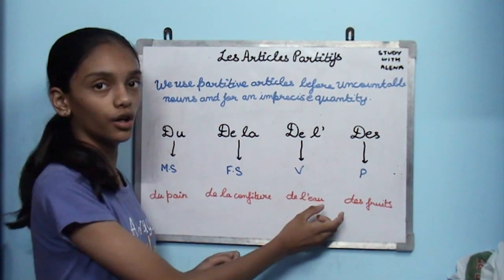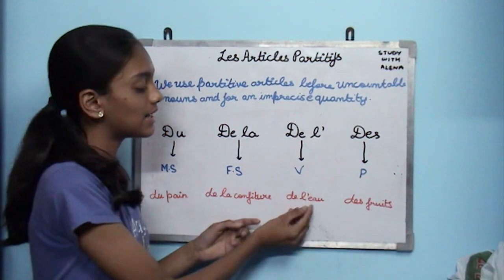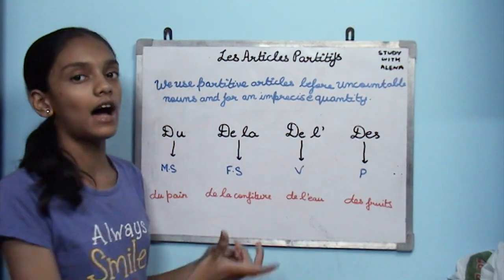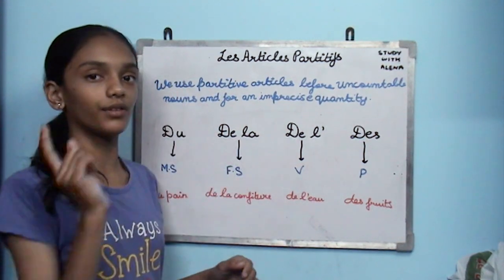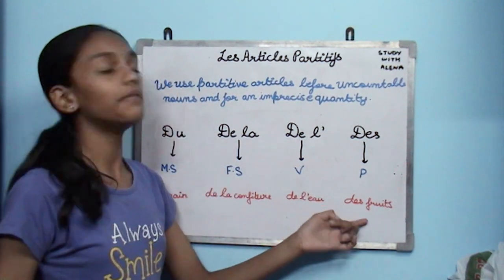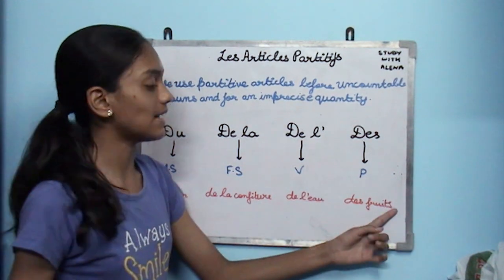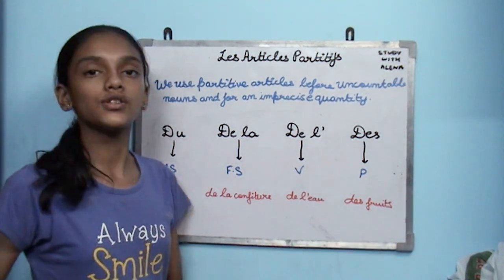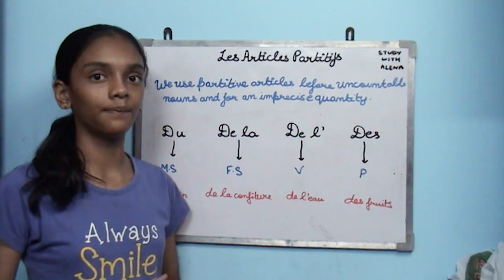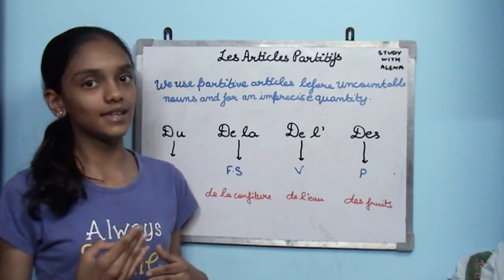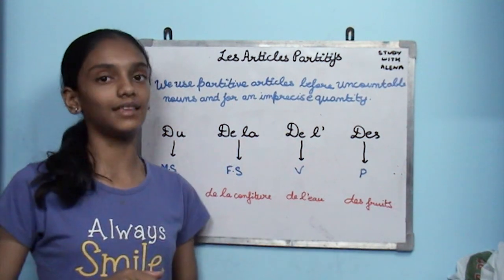Then we have de l'eau. Eau is water. It starts with E and E is a vowel, so we place de l' with an apostrophe. Then for a plural word with an S at the end, we use des. Even if it has an X at the end, it is still plural, so we add des.